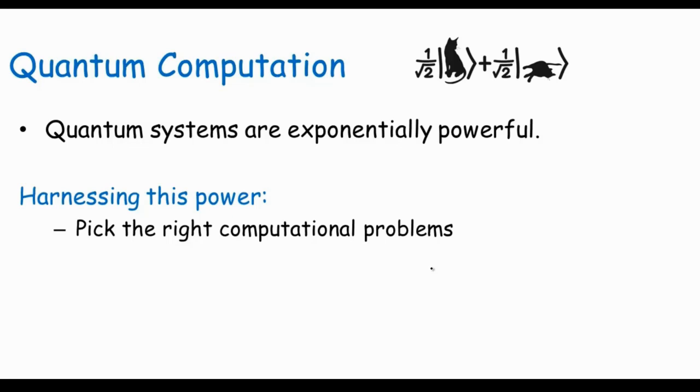So first we have to pick the right computational problems. Not every computational problem can be sped up by quantum computation. Probably the most famous example of a computational problem that can be sped up is what's called the factoring problem, where you're given a number n and you want to factorize it into its prime power factors.